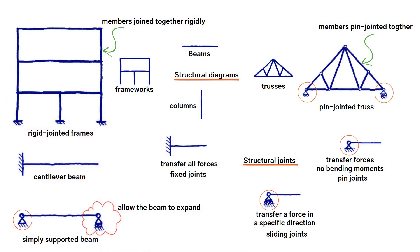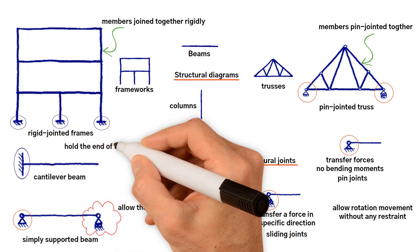These joint symbols indicate idealized joints, so pinned joints allow rotation movement without any restraint, whereas fixed joints hold the end of the member absolutely rigid.